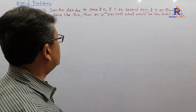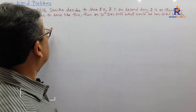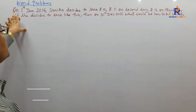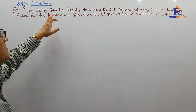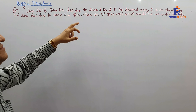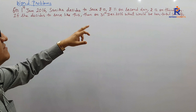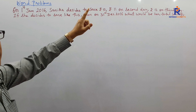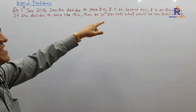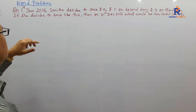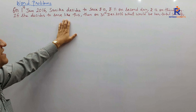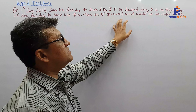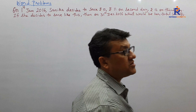Let's move on with the word problems. On 1st January 2016, Sanika decides to save rupees 10 on the first day, rupees 11 on the second day, and 12 on the third day. If she decides to save like this, then on 31st December 2016, what would be her total savings?